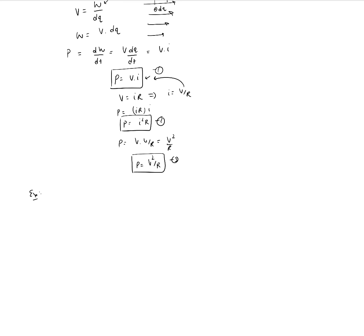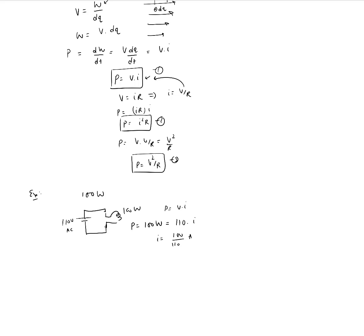Let's do an example. Say we have a 100 watt bulb connected to a 110 volt AC main supply. The question is: what is the current through the circuit? Since we know the power consumed at the bulb is 100 watts and the voltage applied is 110 volts, using P = V × I, we get I = 100 divided by 110 amperes, which comes out to approximately 0.90 amps. That is the current consumed by this 100 watt light bulb.